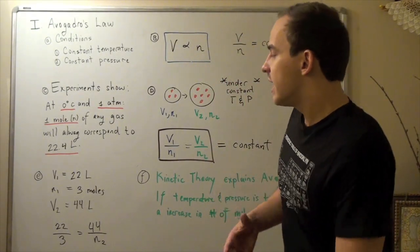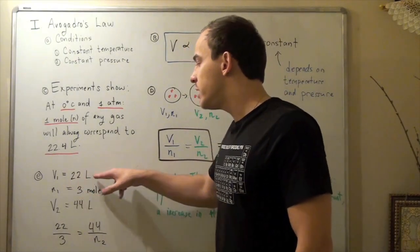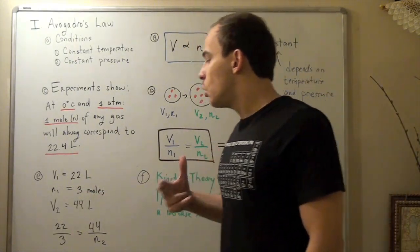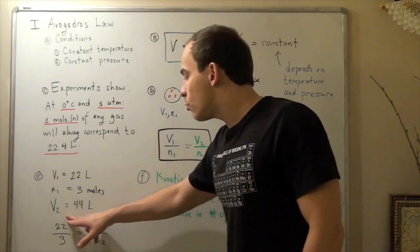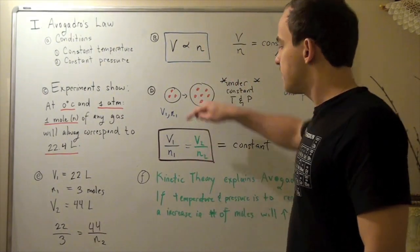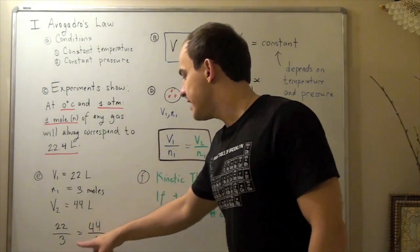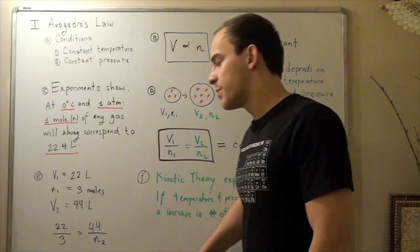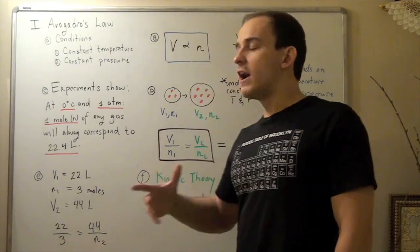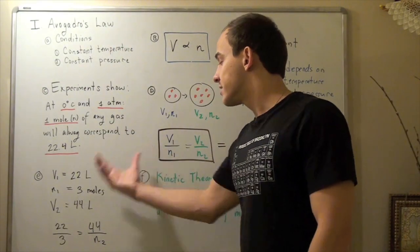Suppose I'm given that for three moles my volume is 22 liters. Now suppose my second volume, my second condition is 44 liters. What is my mole? Well I basically plug in my values, 22 over 3 equals 44 over N2. I solve for N and I find 6. That's exactly how I use Avogadro's law to solve problems.